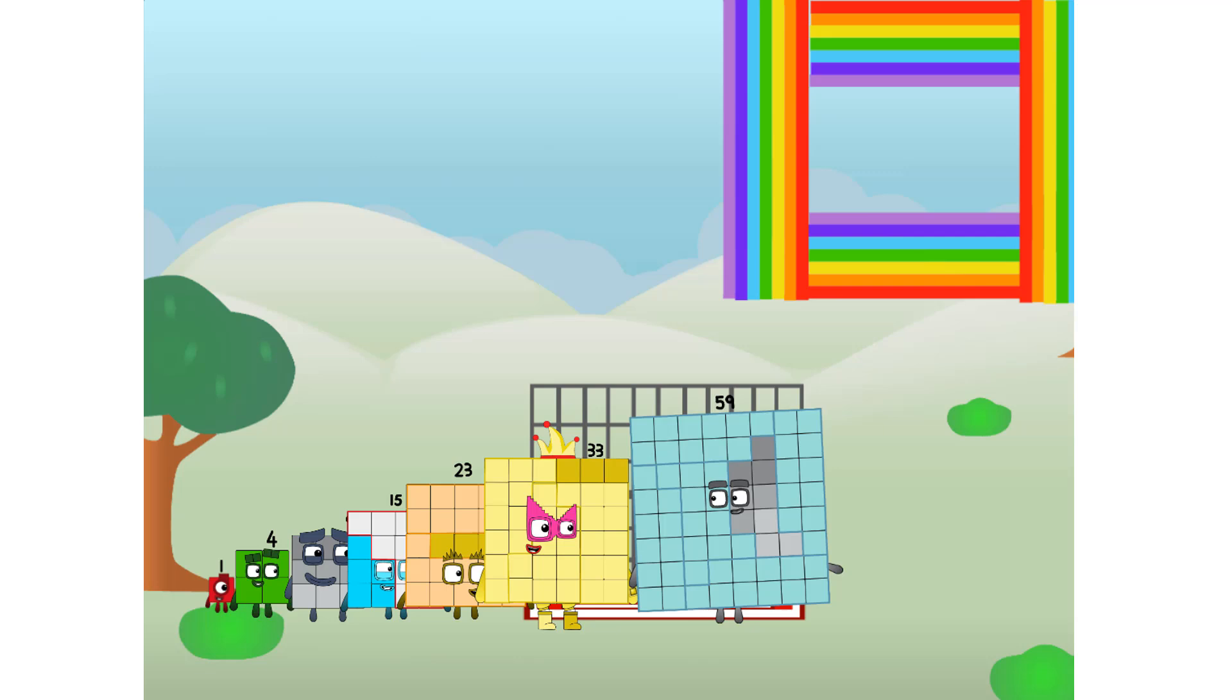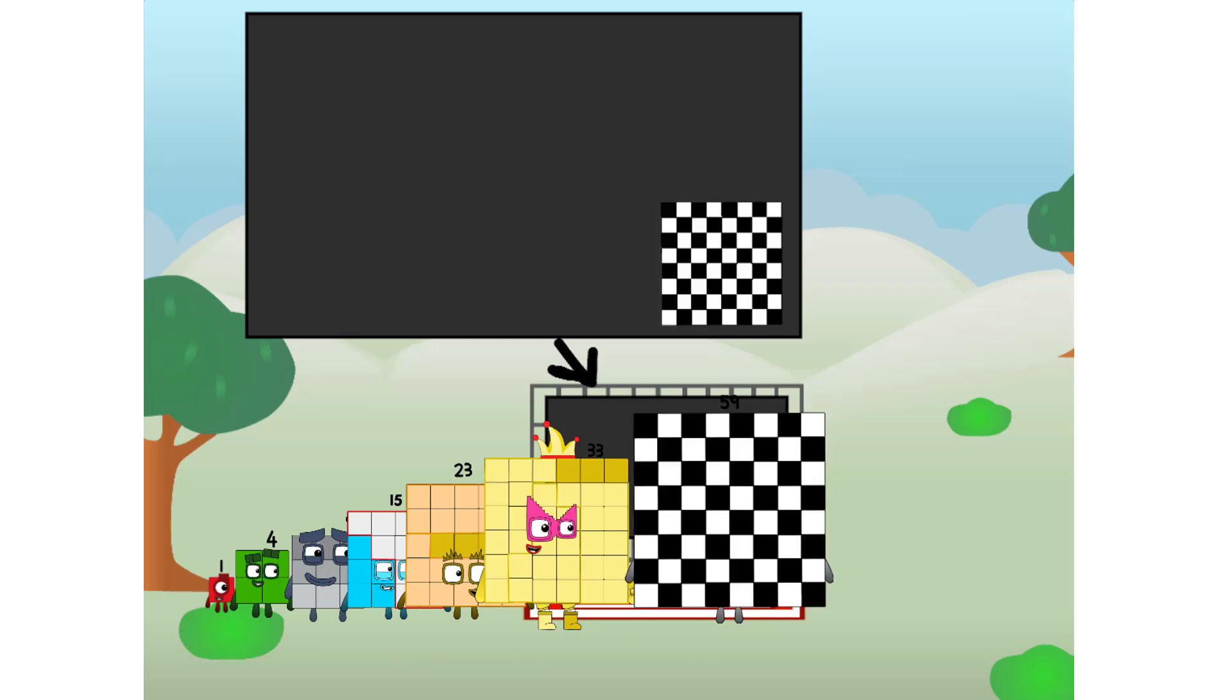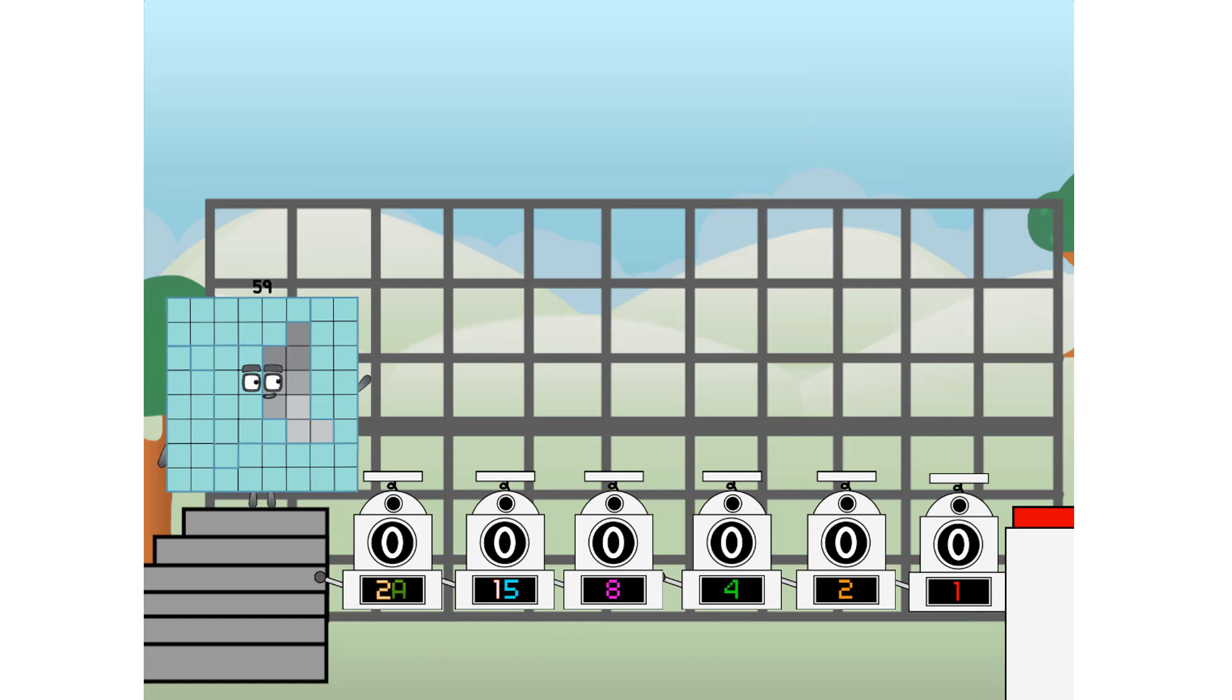There you are. This way, I've got so much to show you. I am 59, and I can be a strong square, a chess board, a super rectangle, eight octoblocks, or even a super cube. But today, I want to show you a little trick I call binary boosters. Using the power of doubles to send any number flying.